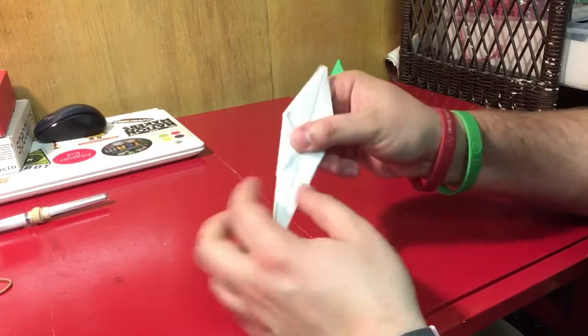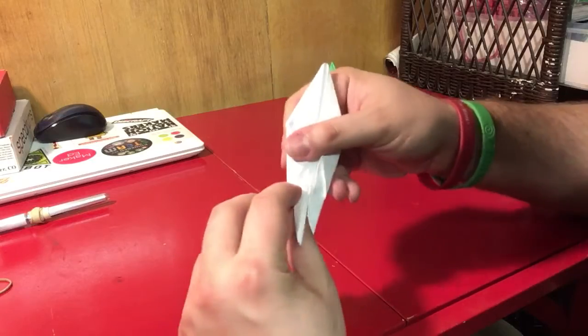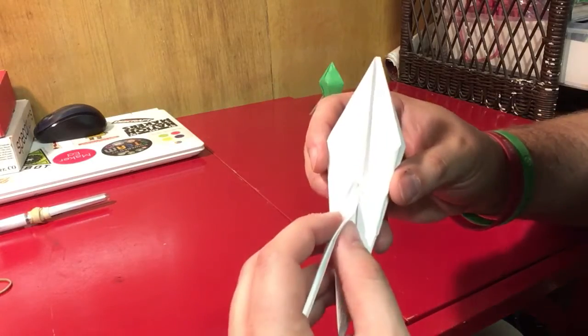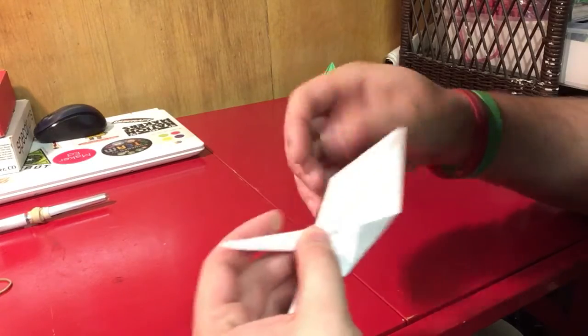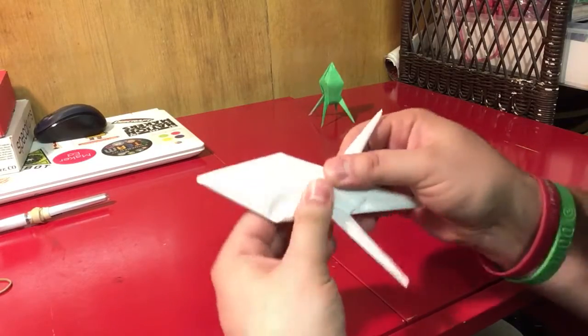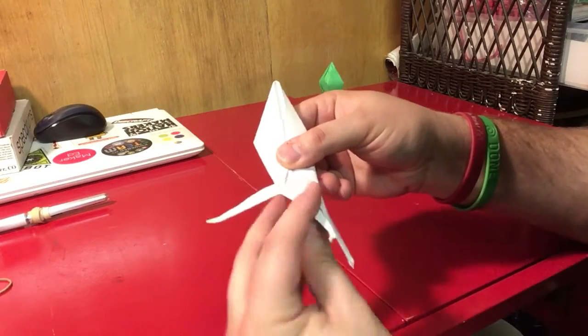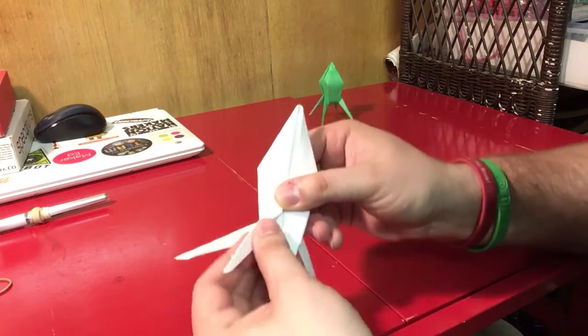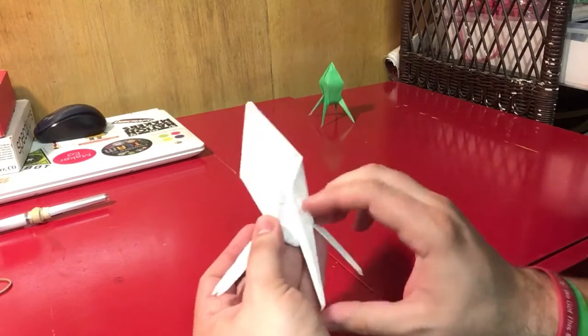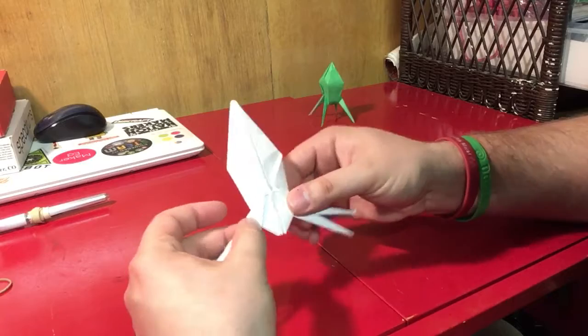Now fold the four legs or prongs out along the edge of that triangle. Fold one out, same with this one across from it. Flip over to the other side and do the same. Fold this one out, and that one out.